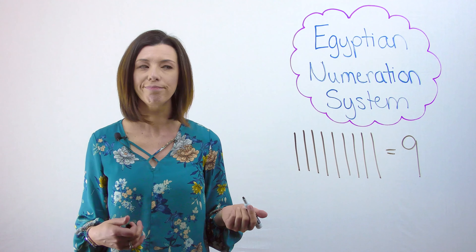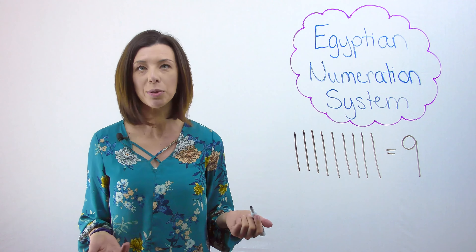If you know that these nine lines equal nine, then what does that mean that just one of these sticks equals?